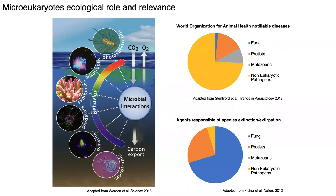Micro-eukaryotes are relevant in the environment. Despite not having a huge range of metabolic capabilities compared to prokaryotes, they can do many things: they can be photoautotrophs, mixotrophs combining photoautotrophy with heterotrophy, symbionts, predators, parasites, and saprotrophs. With these different behaviors and wide size ranges within the microbial scale, they play many different roles and are crucial for trophic networks and the microbial loop in all environments, as well as for animal and human health and conservation.